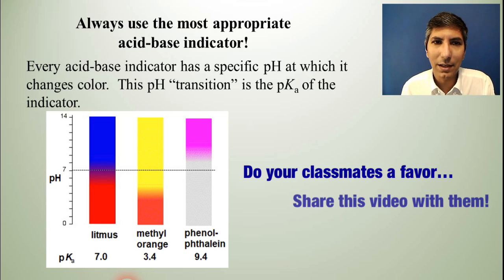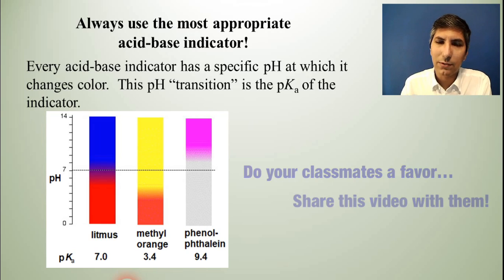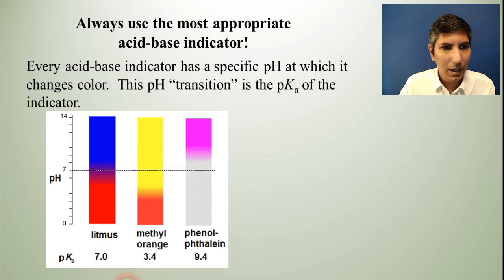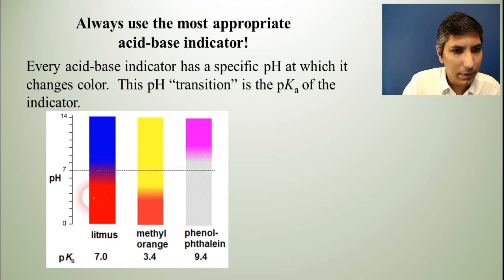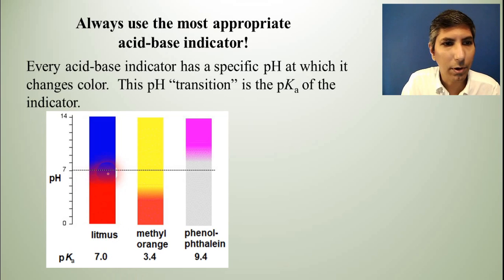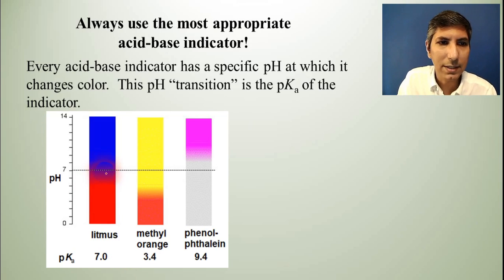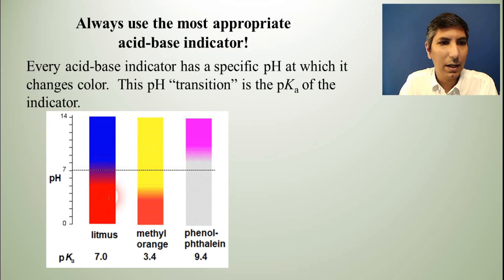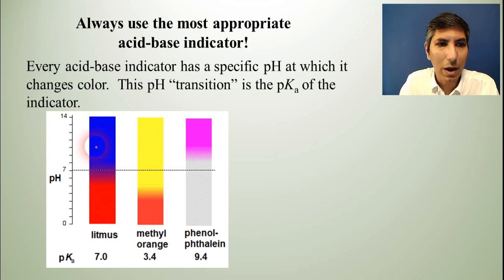Every acid-base indicator has a specific pH at which it transitions from one color to another. For example, litmus — which you've heard of before — transitions around pH 7.0. That means at pH below 7.0 it's red, and at pH greater than 7.0 it's blue.